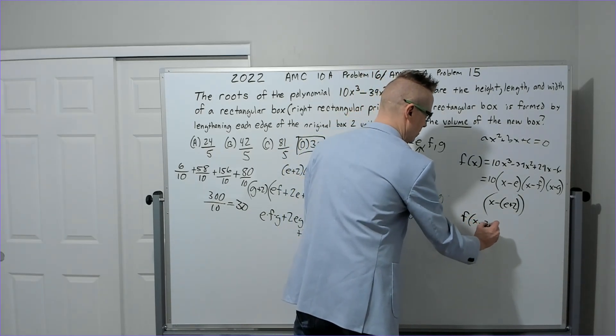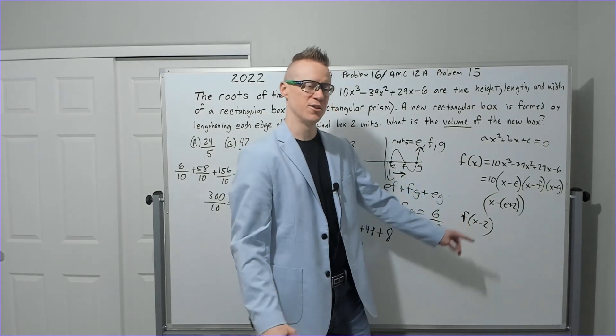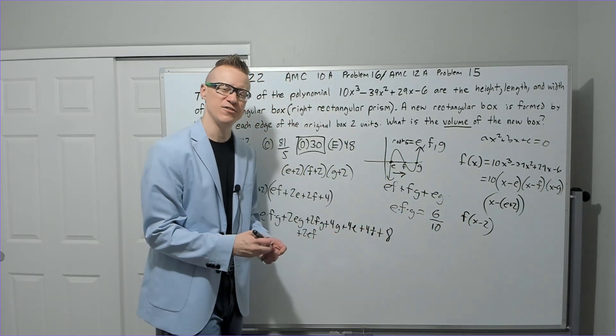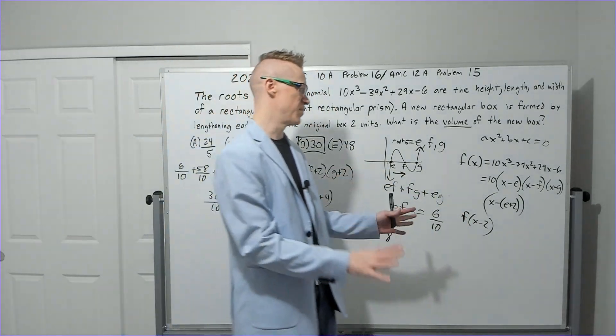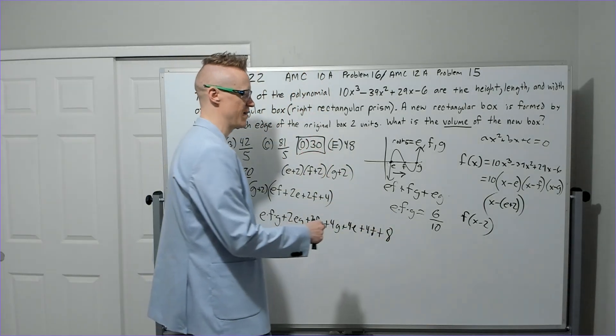And since you're shifting it 2 to the right, you could then make it f(x - 2). That will shift the graph to the right. If you don't know how graph shifting and translations work, I'm not going to break it all down in this video. I could spend a half hour just explaining that topic.